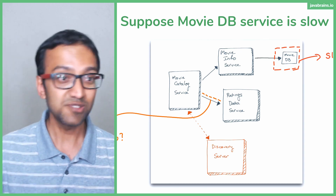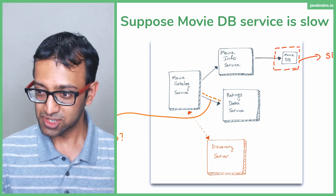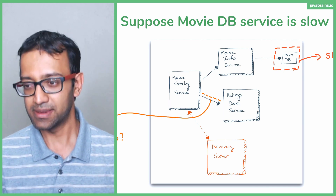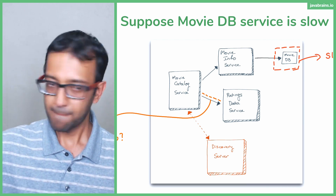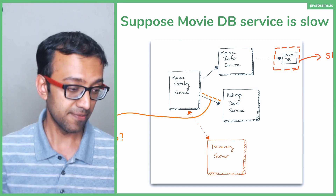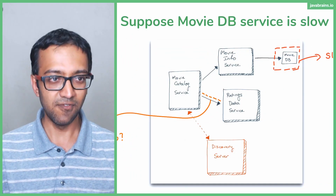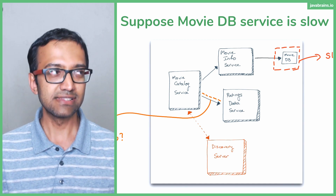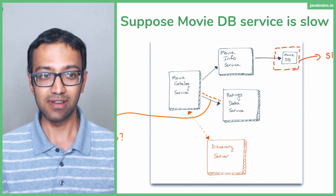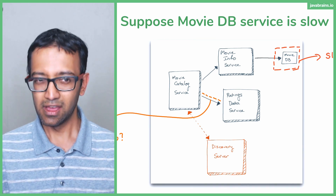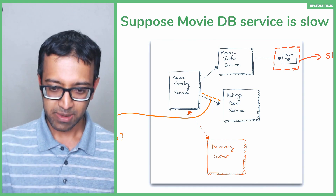Any guesses why this could be? Think about what could be causing this kind of impact. Someone says timeout — that's a very good guess, and it is, though I would say it's more of a solution rather than the root problem. Someone says because one service depends on the other — not quite. Let me explain this.